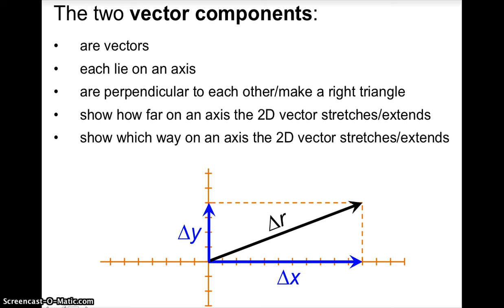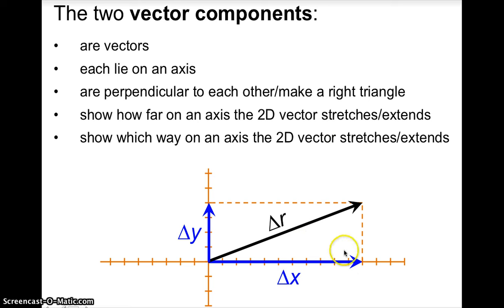The final feature: these components show which way on the x-axis and which way on the y-axis the 2D vector delta r stretches, extends, or points. For example, delta r starts here and points out like this. Is it going to the right or to the left? It's going to the right, so delta x points right. Delta r extends out — is it pointing up or down? It's pointing up, so delta y points up.